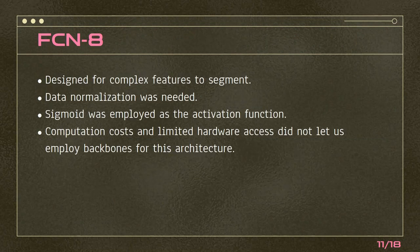FCN8 was originally designed for extracting more complex features — for example, something like a picture from nature. It needed some data normalization, and sigmoid performed better than the other activation functions we tried. We wanted to use some backbones on FCN8 too, but the computational costs were very high — it took about 10 times longer than U-Net to train. So we did not have the proper hardware for it and did not use backbones for FCN8.